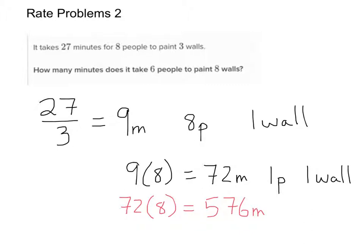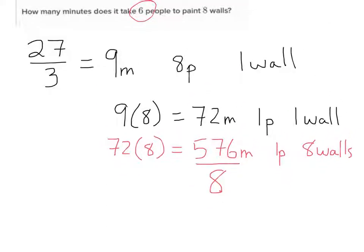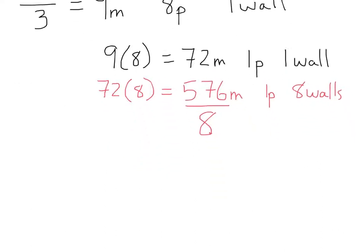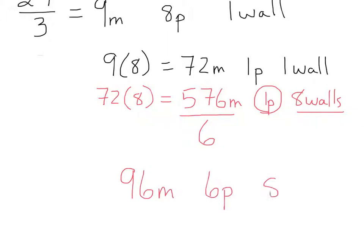That's 576 minutes for 1 person to paint 8 walls. Now if 6 people are going to paint it instead of 1, that divides the time. Instead of 576 minutes, we divide by 6 people, which gives us 96 minutes for 6 people to paint 8 walls.